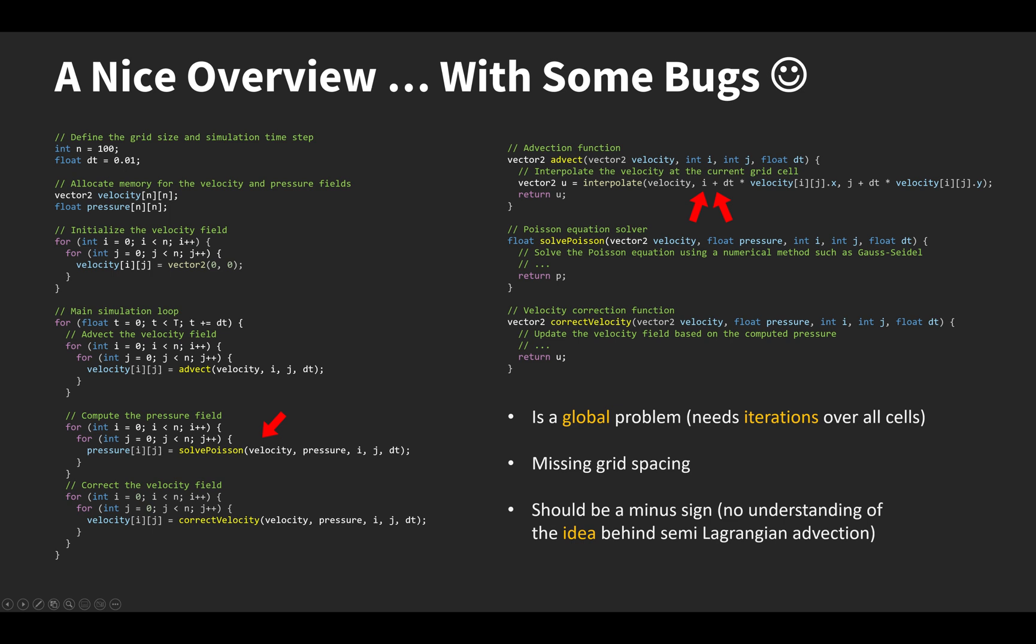First, it defines a 2D grid with velocities and pressure values. In the main simulation loop, we have three steps: advection, computation of pressure, and updating the velocity field. In my implementation, I combined the last two steps. On the right side, there is an implementation of these steps. The advection step uses semi-Lagrangian advection. Code for the other two steps is not provided.